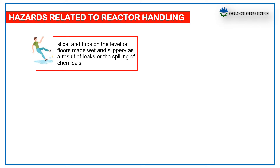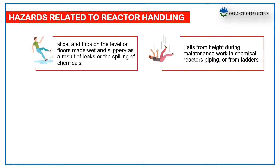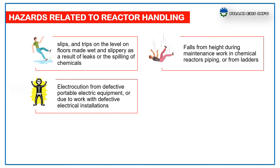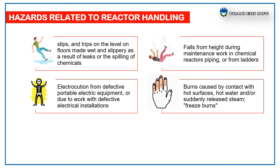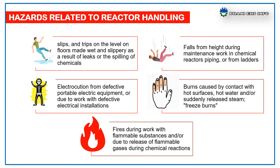Hazards related to reactor handling include: slip, trip, and falls on floors made wet or slippery due to leaks or chemical spills; falls from height during maintenance work on reactors, piping, or ladders; electrocution from defective portable electrical equipment or defective electrical installations; burns from contact with hot surfaces, hot water, or suddenly released steam; and fires during work with flammable substances or due to release of flammable gases during chemical reactions.